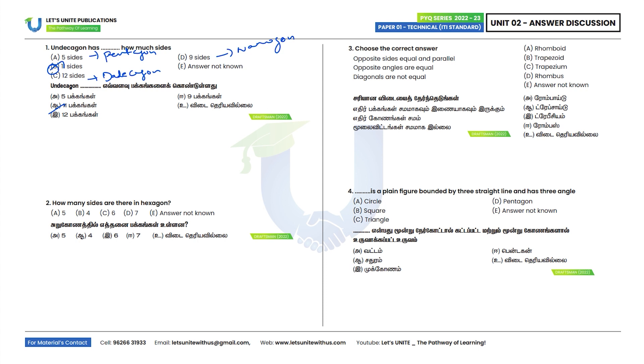How many sides are there in a hexagon? In a hexagon there are 6 sides. Option C is the correct answer.